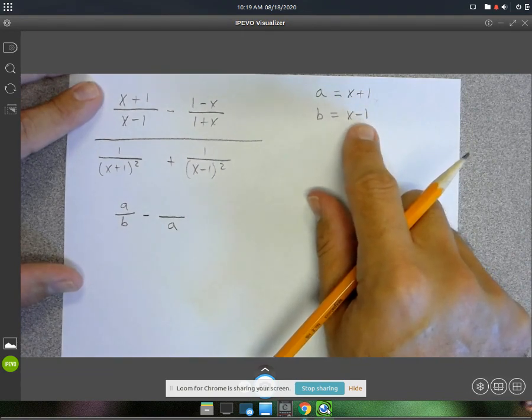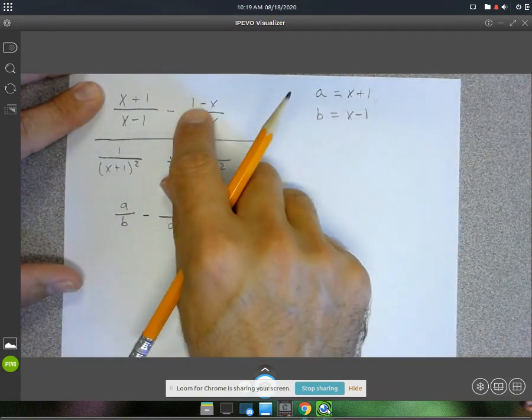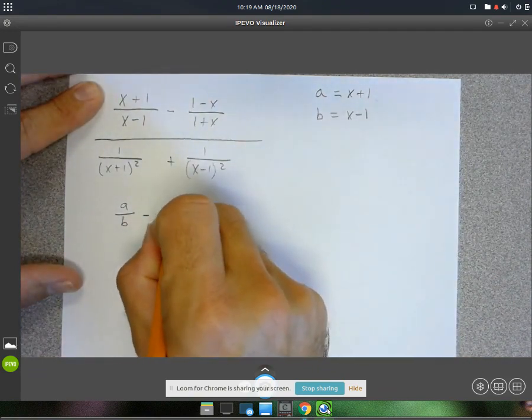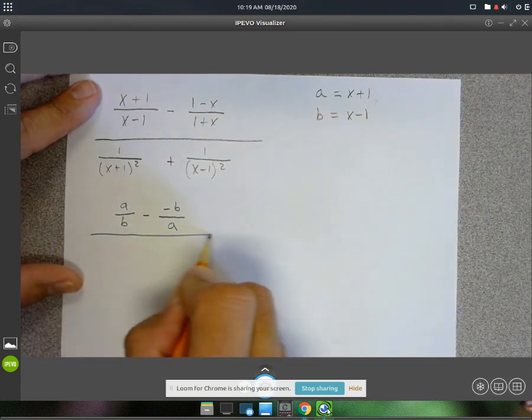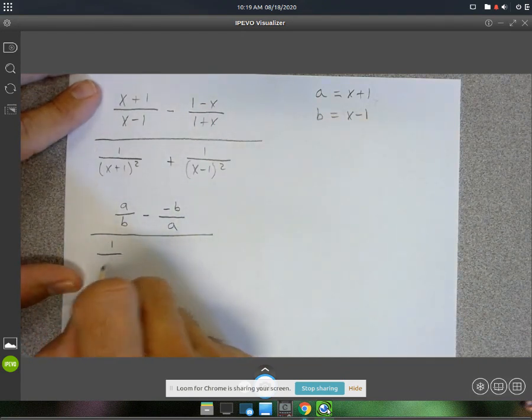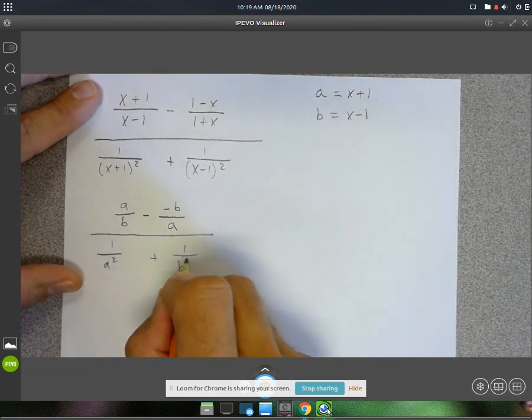So if you multiply this by negative 1, you would get 1 minus x. So I'm going to call this negative b. And then in my denominator, I'll have 1 over a squared plus 1 over b squared.